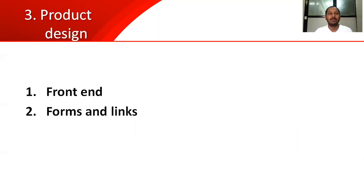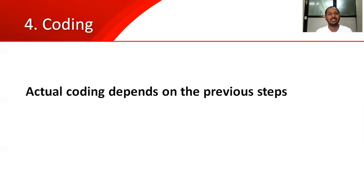Next is product design. For any software, we have a front end with different forms. Those front-end forms are to be designed, and by clicking on each link, the software navigates to the next form. The design report is very important for the coder. The next step is coding — coders check the design report, and depending on it, coding is done with front end and back end everything coming into picture.